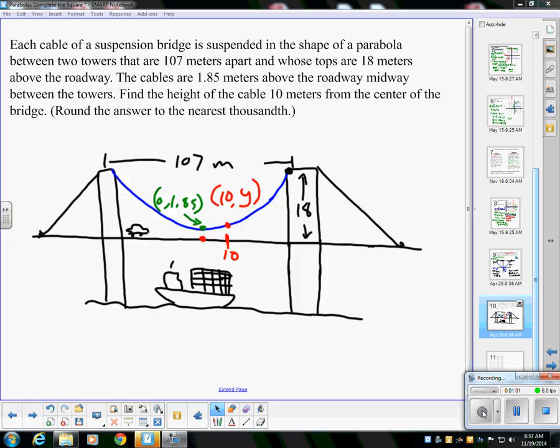When you read this, number one, a suspension bridge - think of the Golden Gate Bridge in California, that's a typical example of a suspension bridge. There's one down in Charleston, there's a lot of suspension bridges everywhere, but they're all categorized by pillars and then a cable that suspends between them.